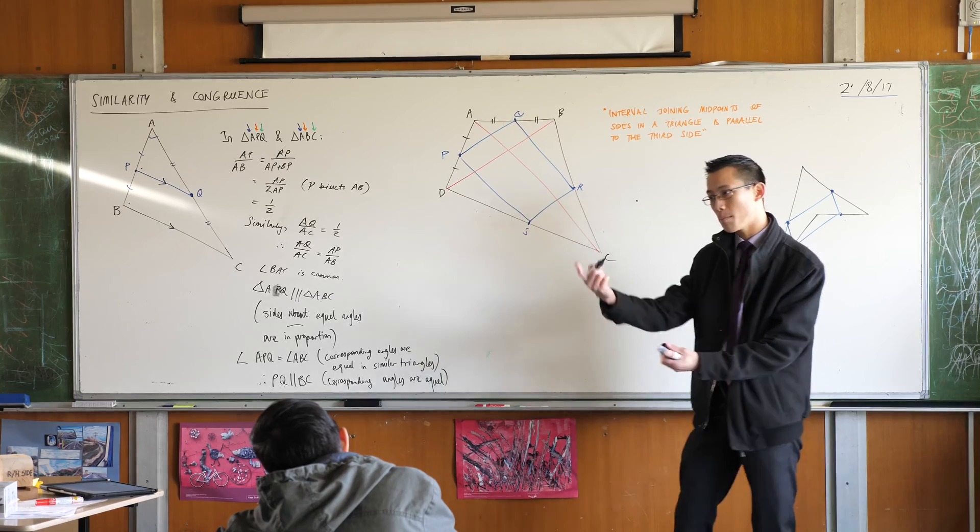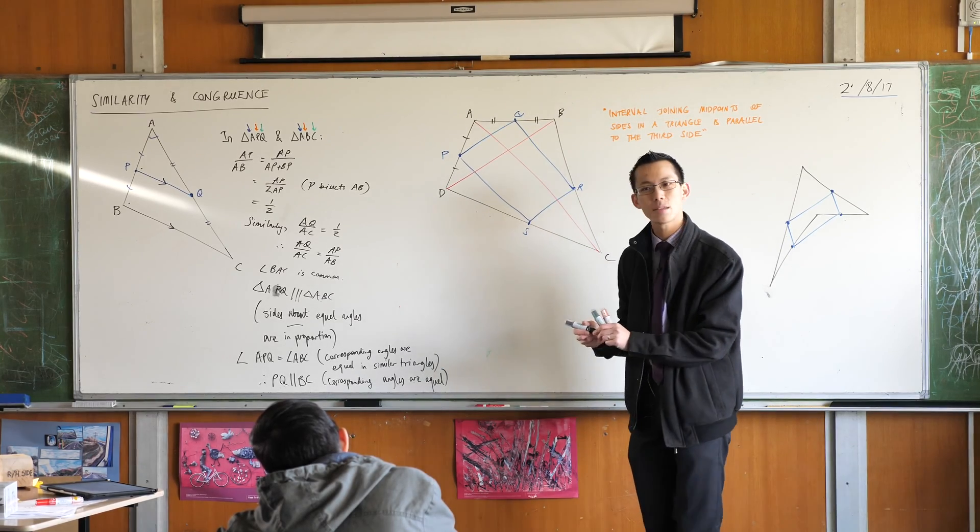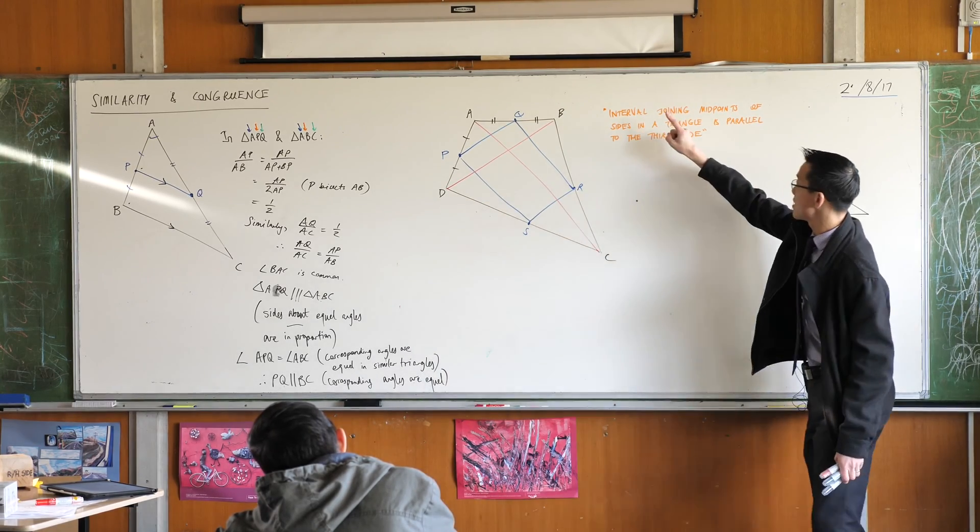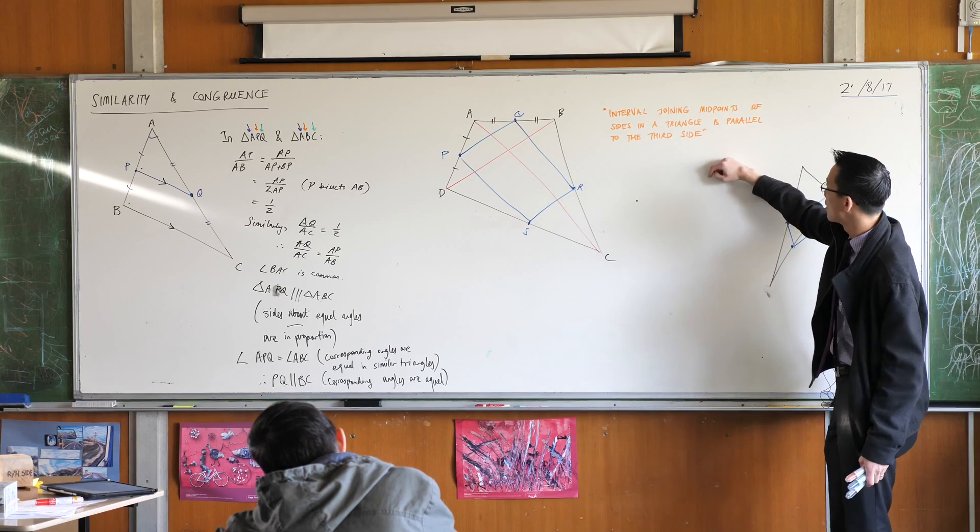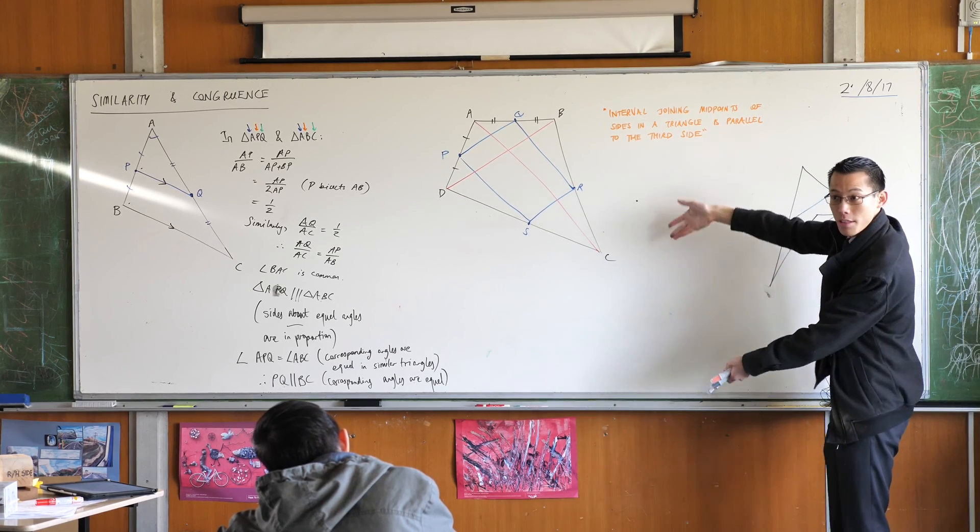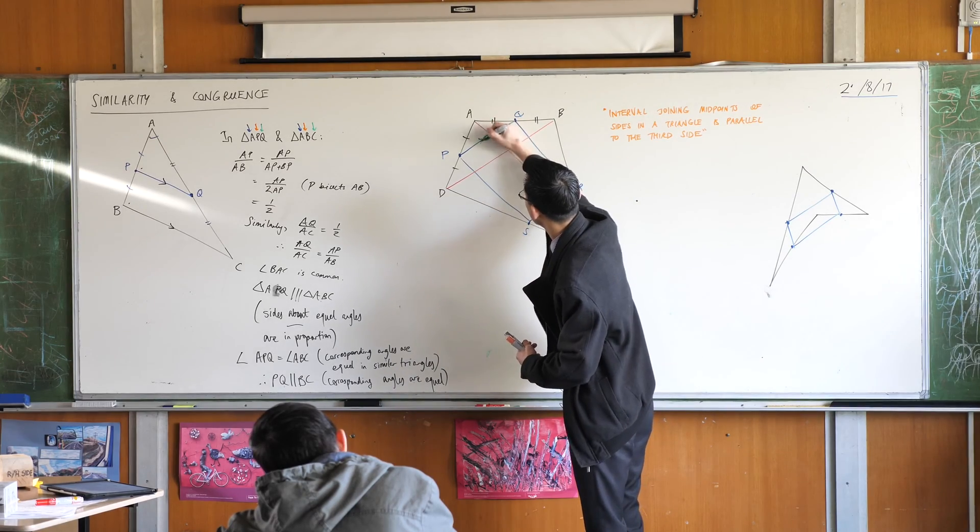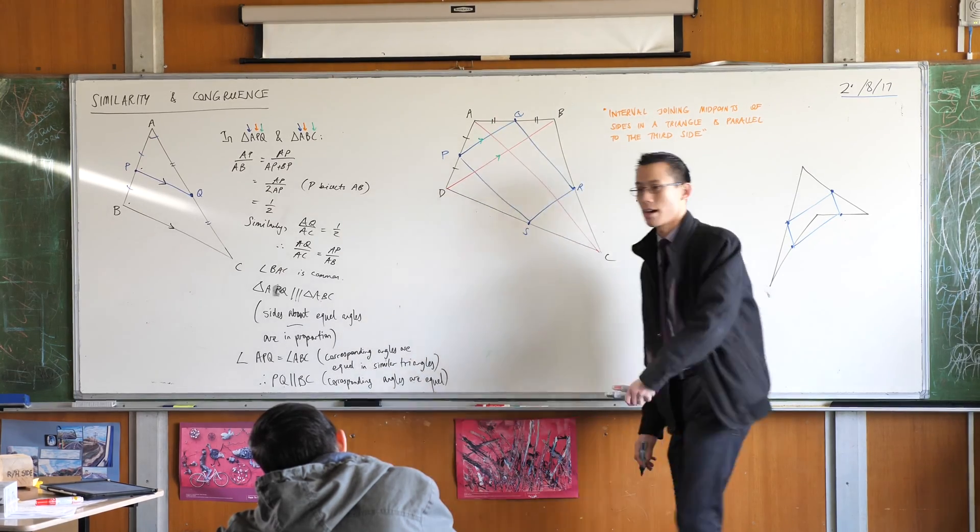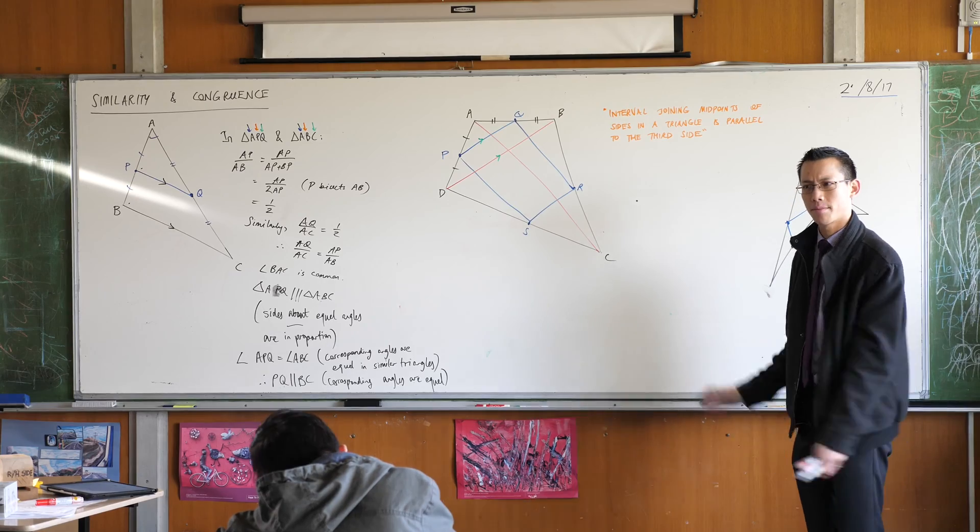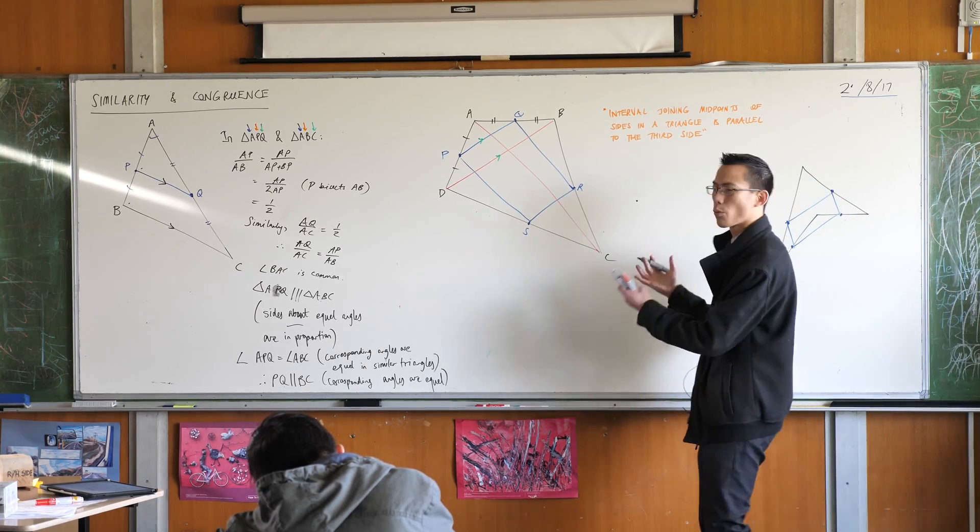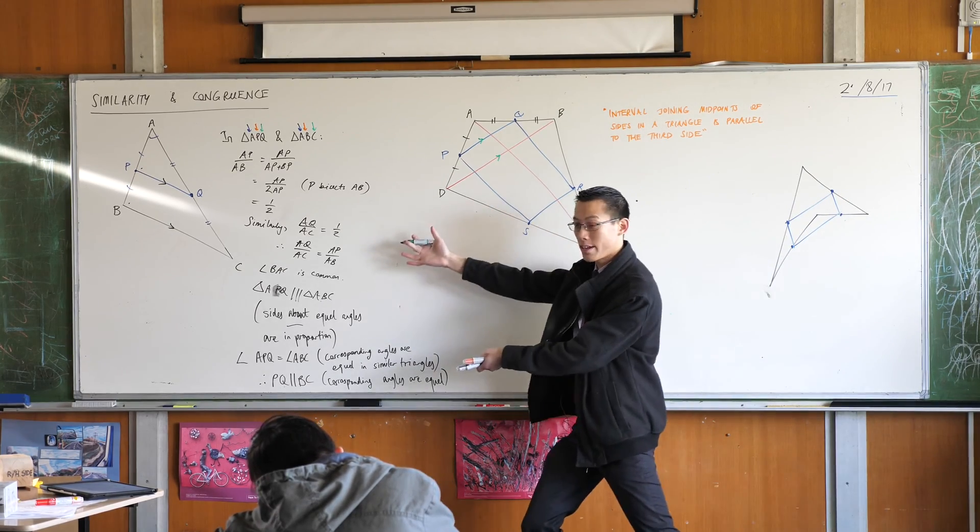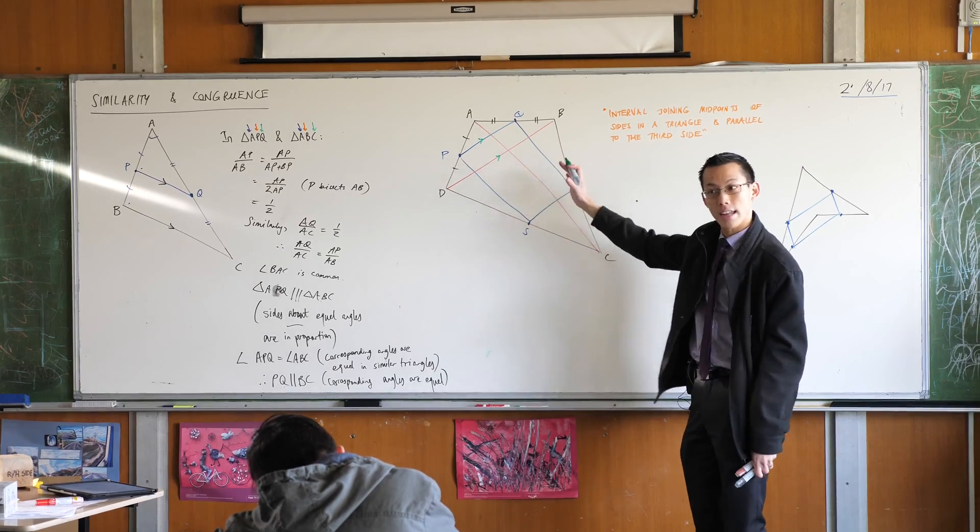So therefore it should fit the pattern we noticed before of creating these parallel lines because the interval joining those midpoints is parallel to the other side, the one you haven't used. So therefore I can say this side is parallel to this side, or intervals I should say. Does that make sense? I'm not going to rehearse that proof because we just proved it, so I can look at that and I can see it.